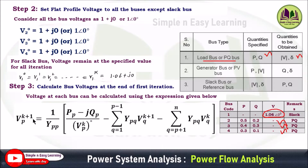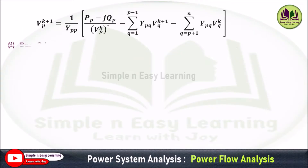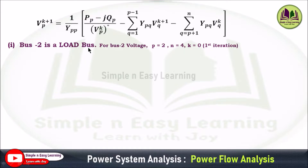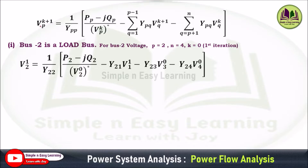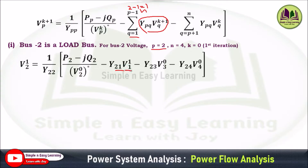For the first iteration, substitute k=0. In this formula, P is the bus number and n is the number of buses. For bus 2: P=2, n=4, k=0. So V2¹ = (1/Y22) × [(P2−jQ2)/V2⁰* − ...]. In the first summation, Q varies from 1 to P−1 = 1 to 1, giving only one term: Y21·V1¹. In the second summation, Q varies from P+1=3 to n=4, giving two terms: Y23·V3⁰ and Y24·V4⁰.